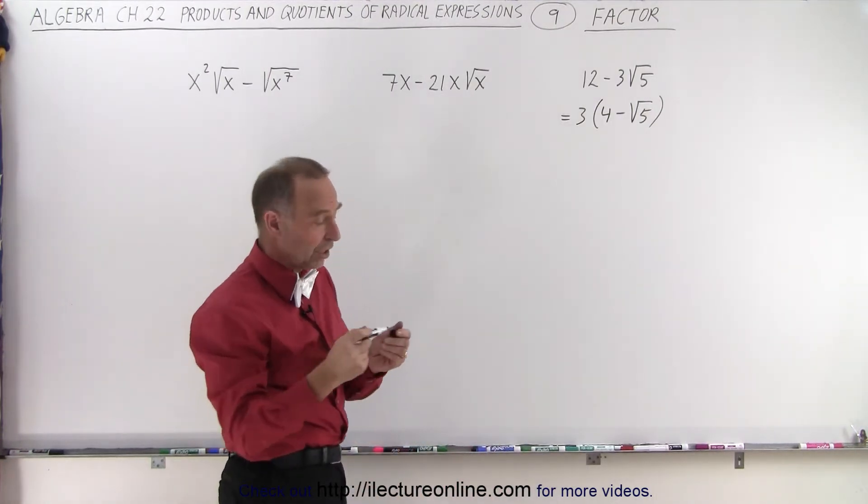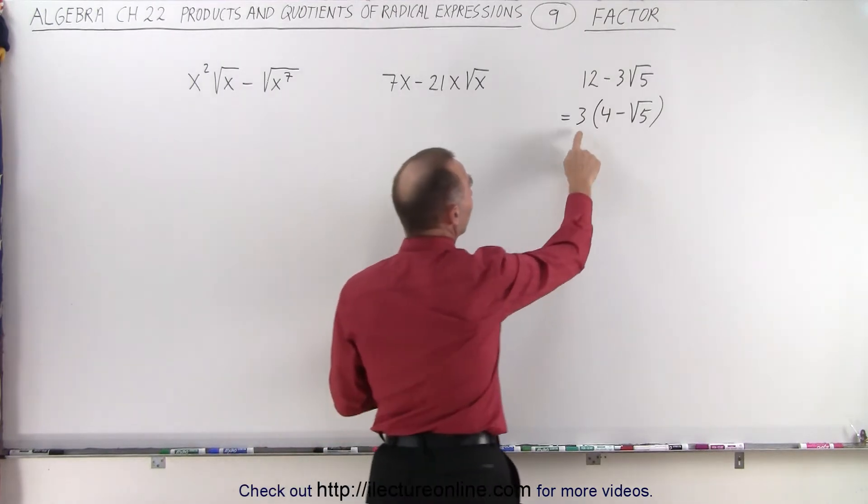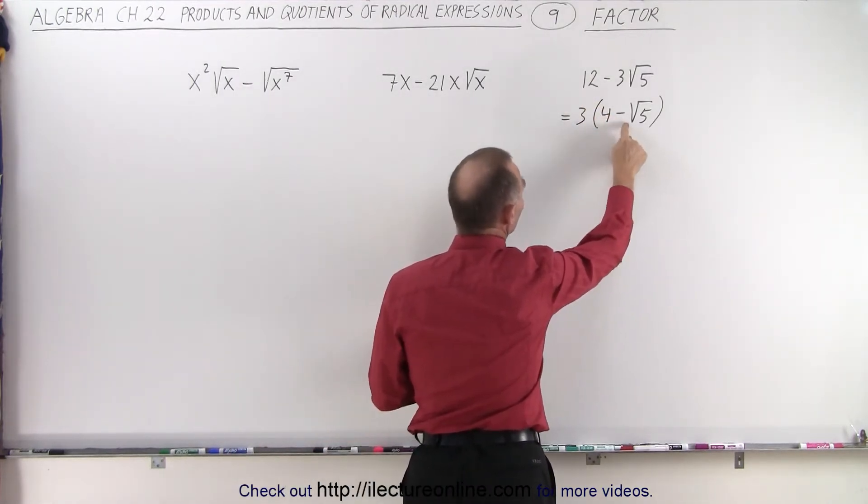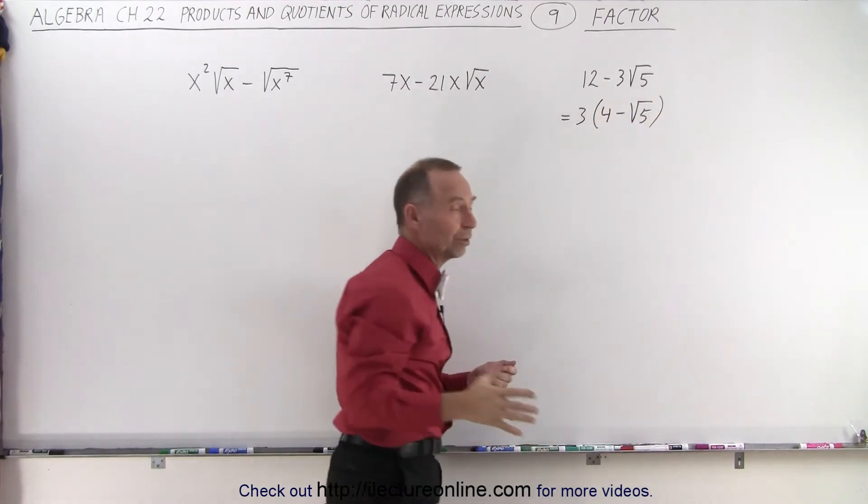If you want to make sure you did it correctly, then multiply back in. 3 times 4 is 12, and 3 times the negative square root of 5 is negative 3 times the square root of 5.